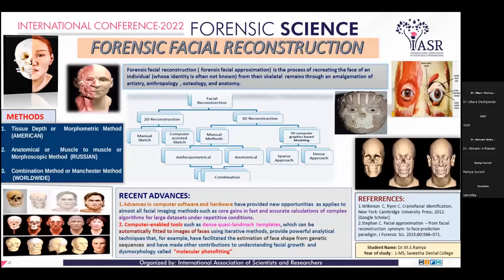The anatomical method, also called the muscle-to-muscle or morphoscopic method, was developed by Gerasimo, who developed the approach by carving the muscles, glands, and cartilage layer by layer onto the skull. This technique is much slower than the tissue depth technique but has a greater degree of anatomical expertise, and this approach has been used to recreate even prehistoric skulls.